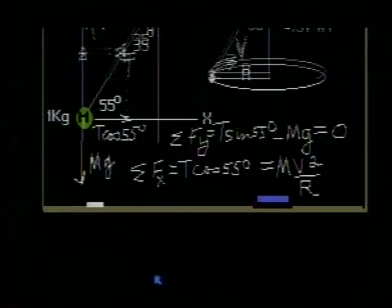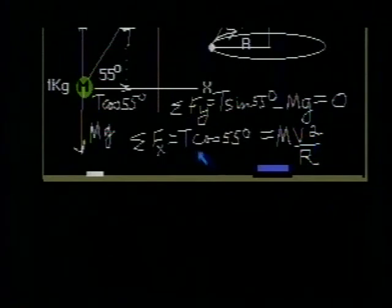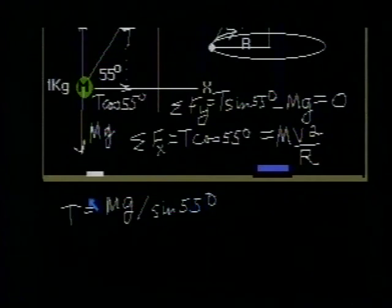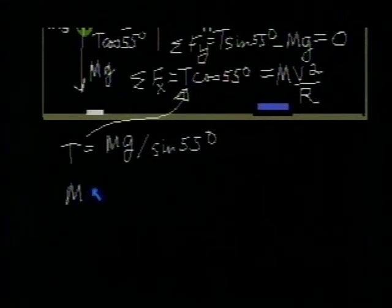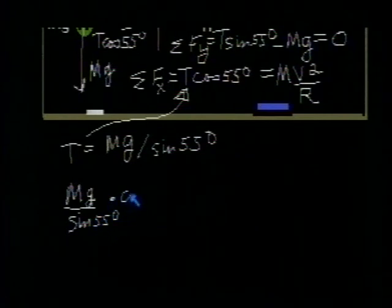Now, looking for V in this equation, we have the unknown T. But we can solve for T from our first equation, writing that T is equal to mg divided by the sine of 55 degrees. And then take that expression for T and substitute it into our second equation to eliminate T. If we do that, we can then write T, which is now mg over the sine of 55 degrees, multiplied by the cosine of 55 degrees, equals M V squared divided by R.